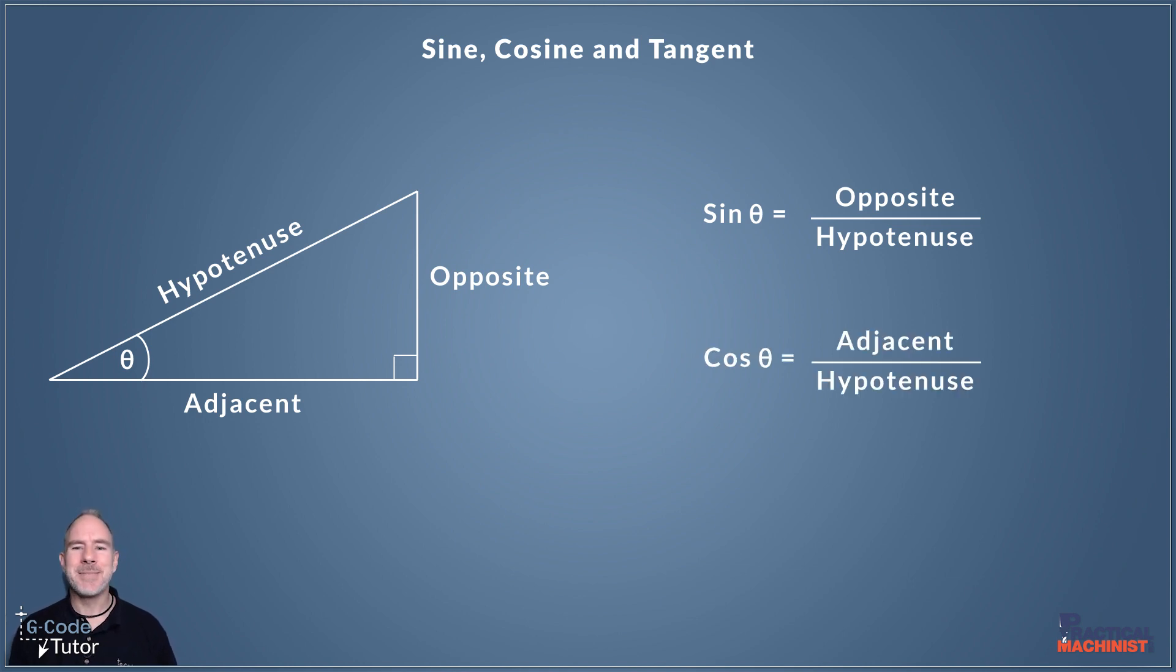So cosine is the other one that's adjacent divided by hypotenuse, gives us the cosine of the angle that we are looking for. And with tangent, tangent is our opposite over adjacent. So sine and cosine both use the hypotenuse and tangent uses the other two lengths.